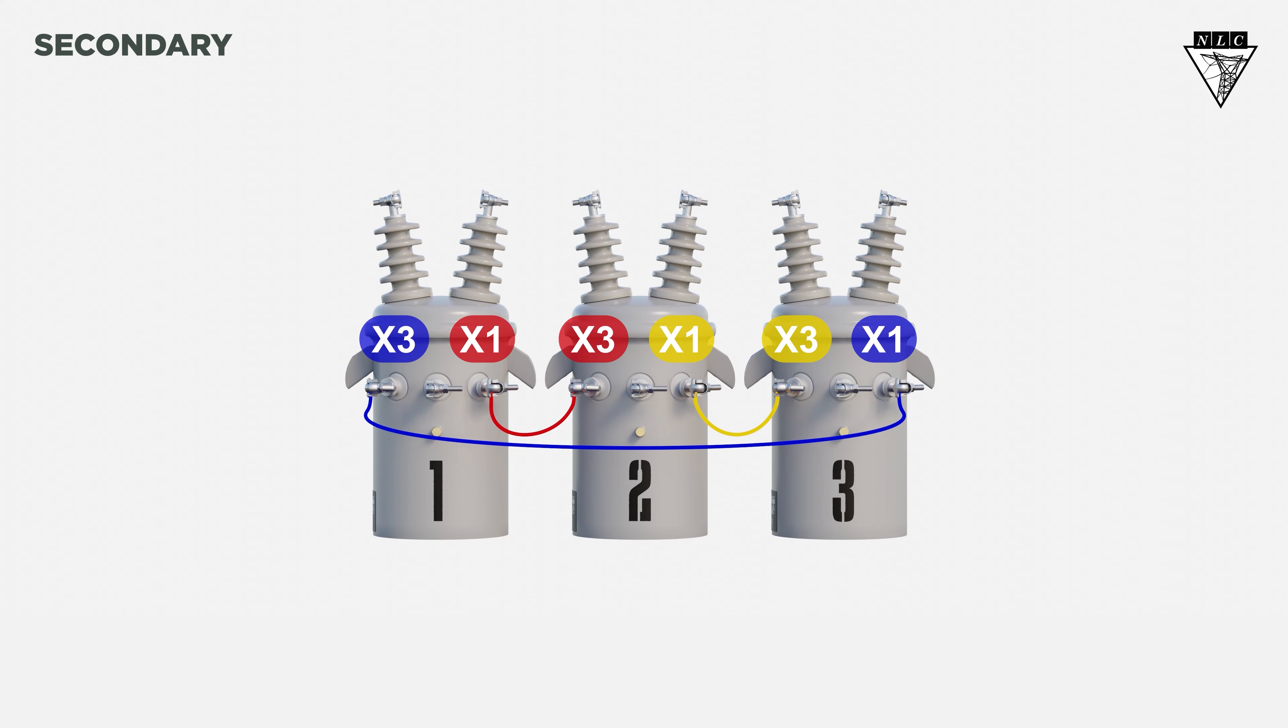To get power to the customer, run the jumpers down from the X3 and X1 of the second transformer, and the X1 of the third transformer. These are your hot legs.